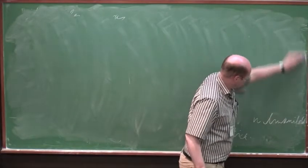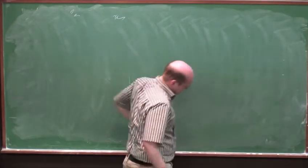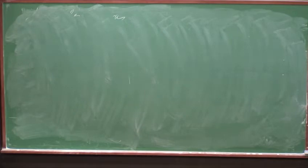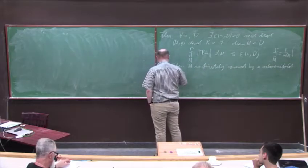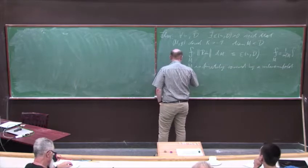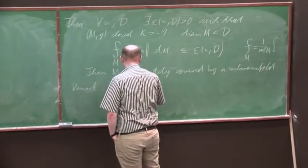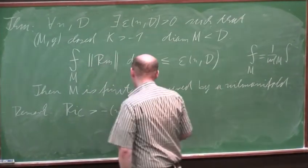The conclusion is essentially the same as a known theorem; it's only that the assumptions are slightly weaker. A remark: if we assume instead Ricci curvature larger than minus 1, the conclusion is false.